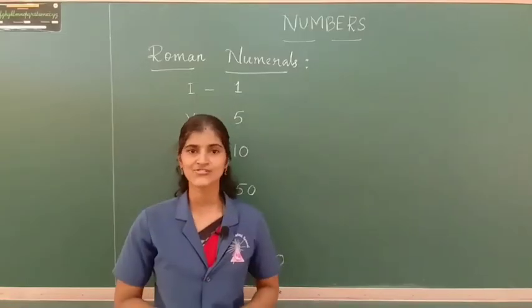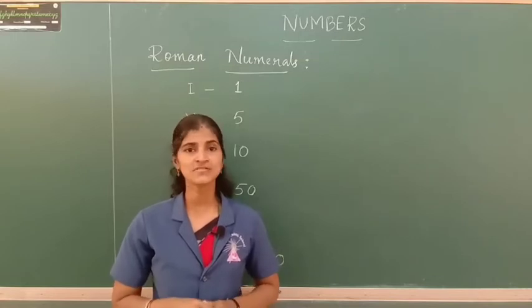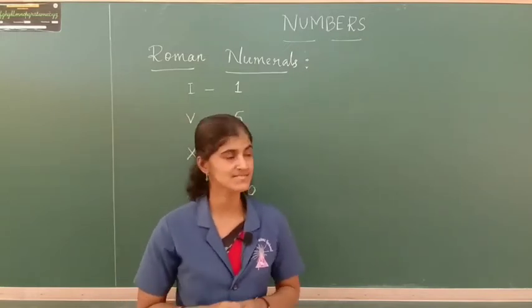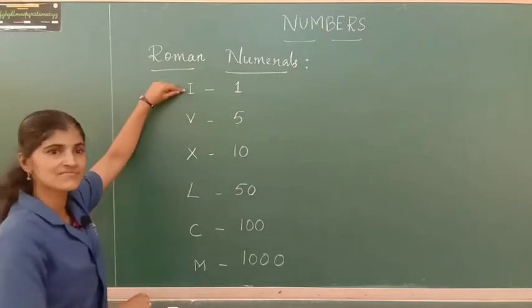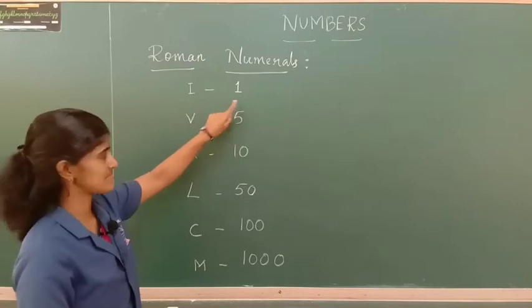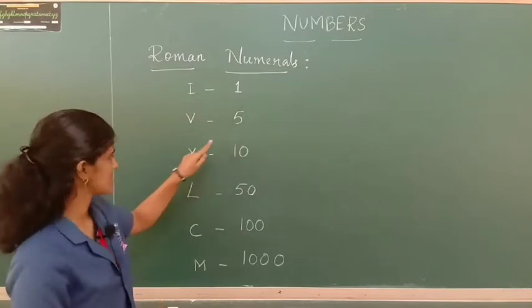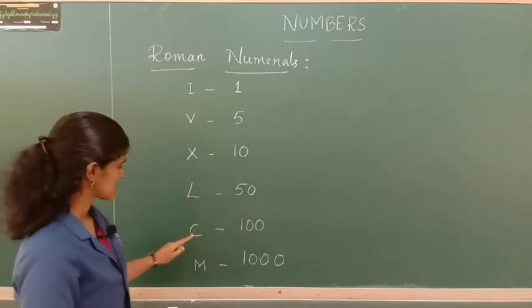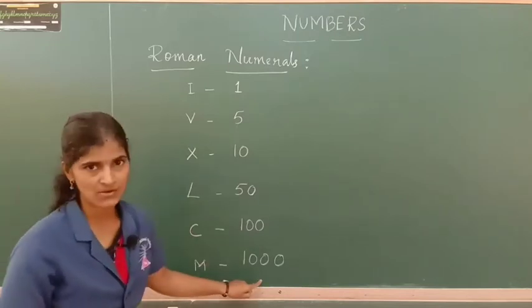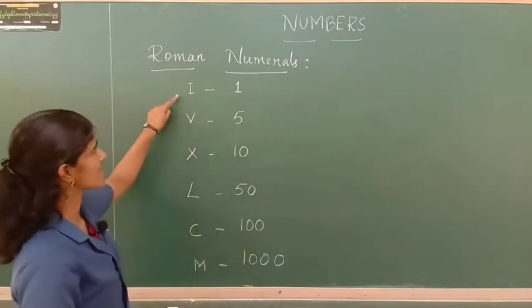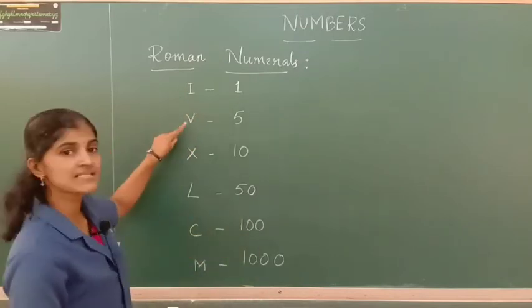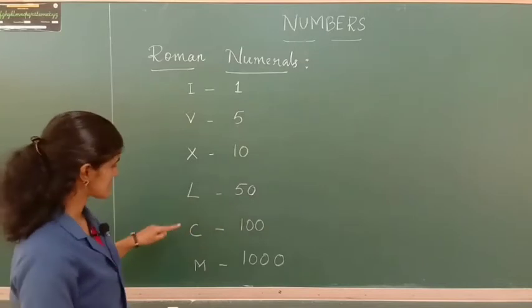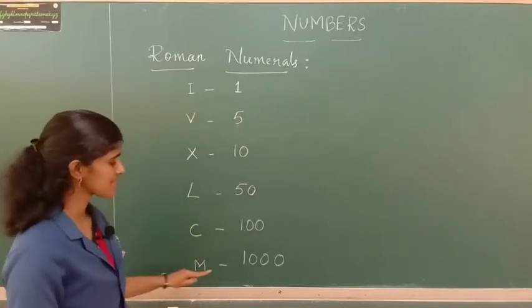In today's class we are going to learn one more numbering system: Roman numerals. The symbols for Roman numerals are: I is for 1, V is for 5, X is for 10, L is for 50, C is for 100, and M is for 1000.